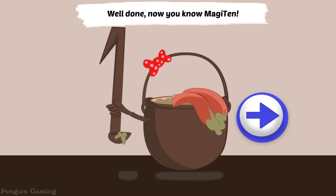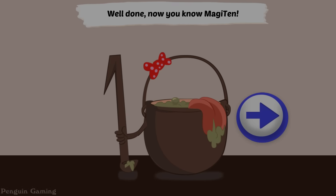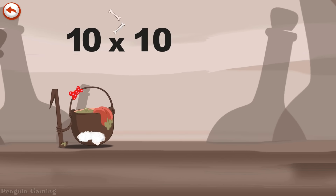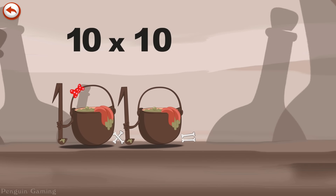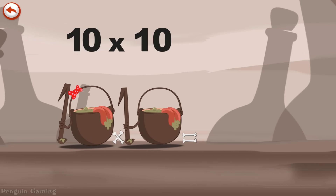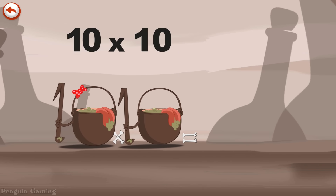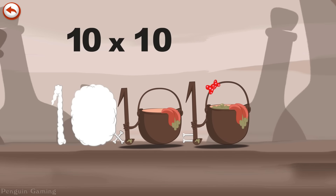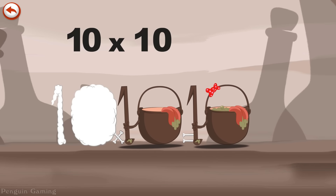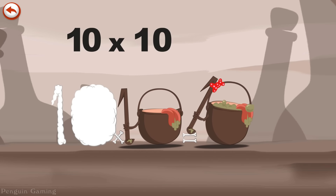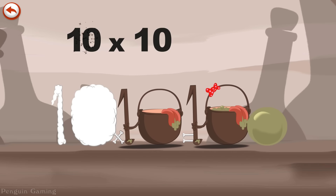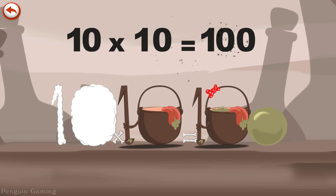Well done. Now you know Magi Ten. What's the story of 10 times 10? When the potion Magi Ten meets another one, it makes her very, very hungry. She dives head first into the cauldron and comes out feeling very full. She gives an enormous magic burp and blows a bubble in the shape of a 0. 10 times 10 is 100.